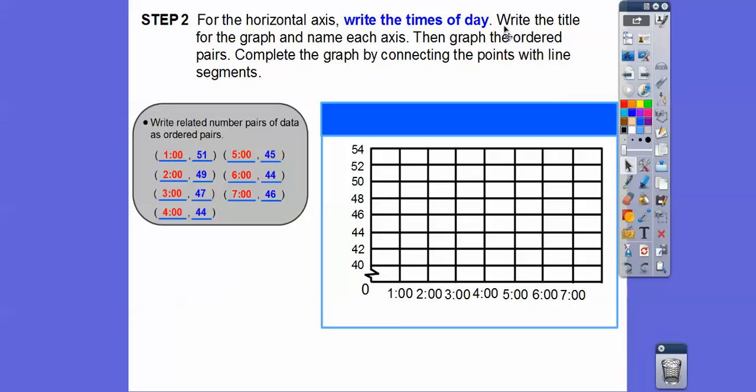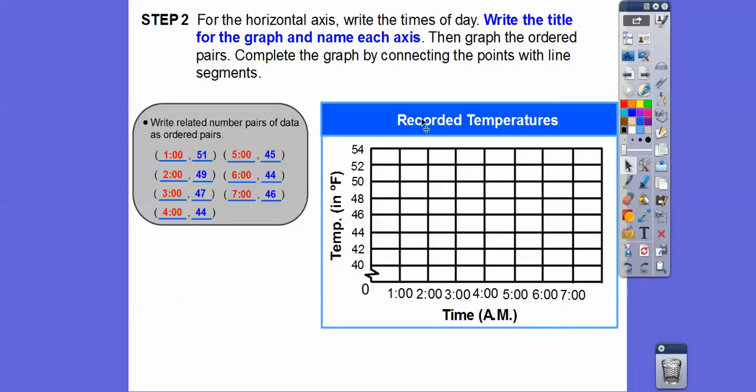So the title of the graph was recorded temperature. Over here, this is the y-axis with the temperature. It's going to be these numbers right here, and that was the temperature. And this down here is going to be the time of day and the a.m. So here's our title, recorded temperature. Here's the label of the vertical axis, the temperature. It's always these y-coordinates, the second ones. And down here is the time of day. It's always the x-coordinates here.